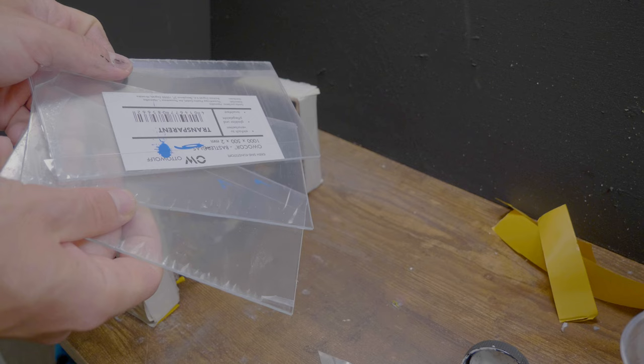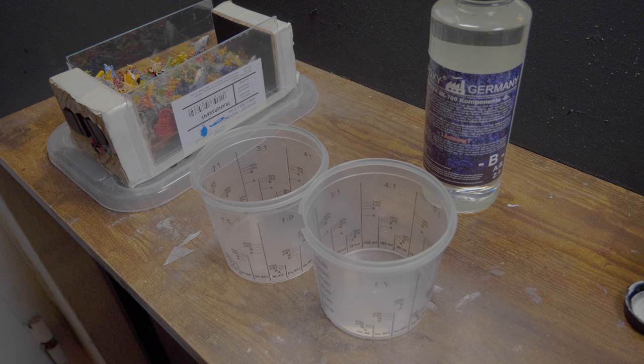I tape the wood all around neatly with some tape. From acrylic glass remnants I build a mold. I make sure that all corners and edges are sealed with hot glue. Which, attention spoiler, did not work so well.